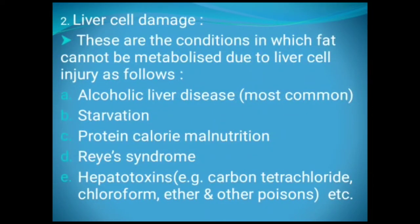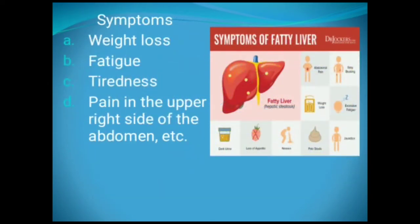Second, liver cell damage — these are conditions in which fat cannot be metabolized due to liver cell injury — as follows: alcoholic liver disease, which is the most common; starvation; protein-calorie malnutrition; diet syndrome; and hepatotoxins, for example carbon tetrachloride, chloroform, ether, and other poisons. Symptoms include weight loss, fatigue, tiredness, and pain in the upper right side of the abdomen.